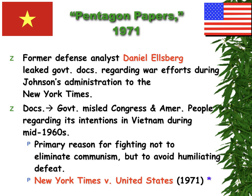The Pentagon Papers was a roughly 7,000-page document written by the government, starting with the Truman administration and going all the way through Lyndon B. Johnson, about how the government may have misled the people and Congress about how the war was unfolding in Vietnam. Daniel Ellsberg leaked parts of it to the New York Times, and the New York Times wanted to publish it. Nixon fought against the release, and this actually went to the Supreme Court. The Supreme Court ruled in favor of the New York Times, using the First Amendment freedom of the press. Daniel Ellsberg was referred to by Nixon as the most dangerous man in America.